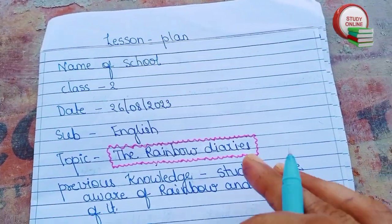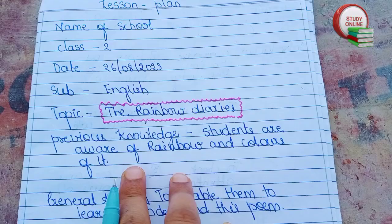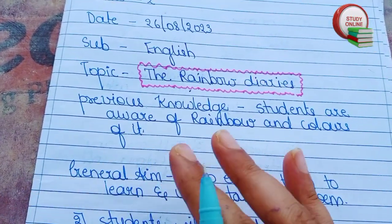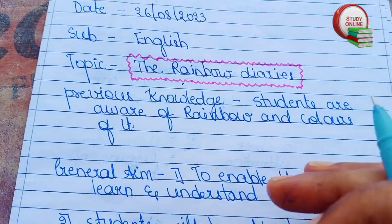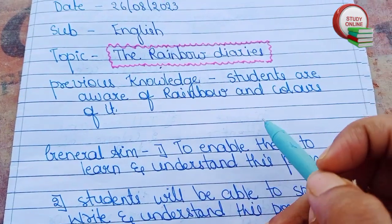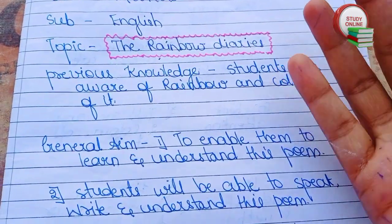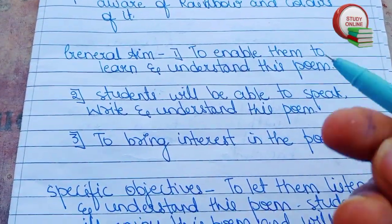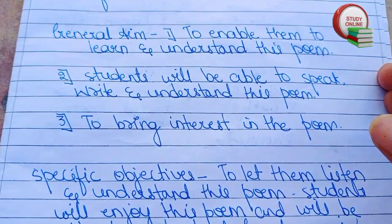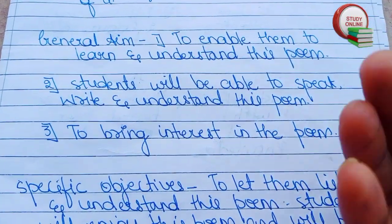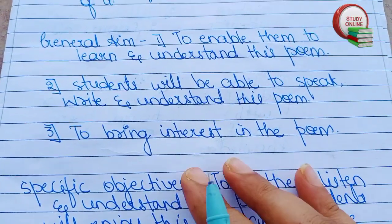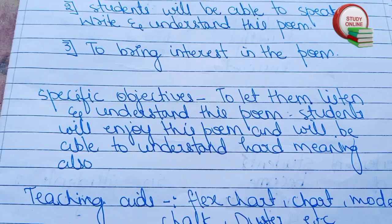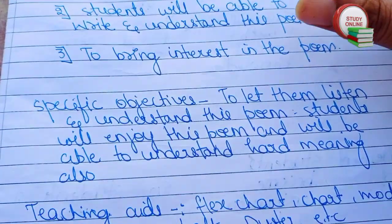Let's see how to make this lesson plan. 'The Rainbow Diaries' is for class 2. For previous knowledge, we basically write what students are already aware of — students are aware of rainbows and colors of rainbows. For the general aim, we want to tell them about this beautiful poem, and students will be able to write, speak, and understand it, and develop interest in the poem. For specific objectives, we write our motive behind teaching this poem.